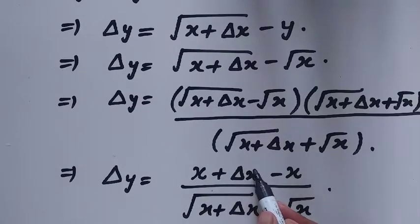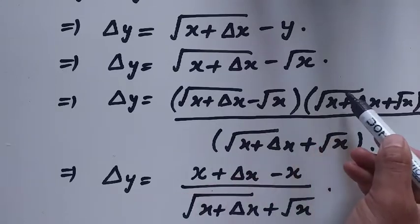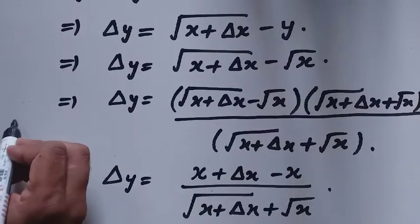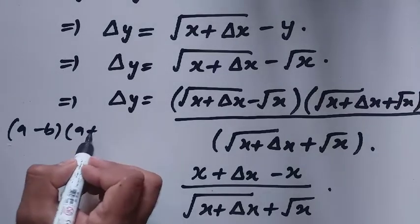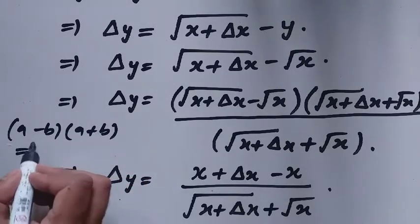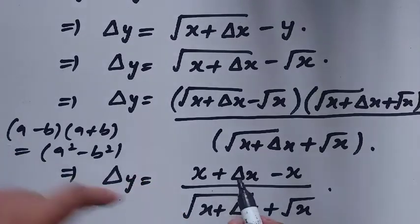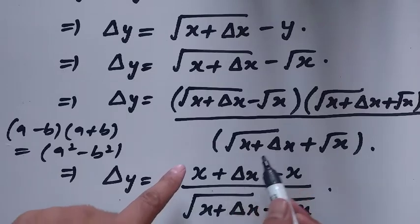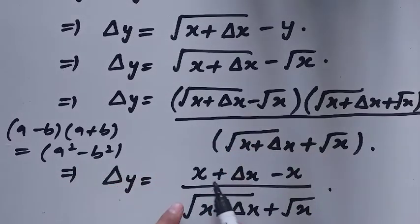Here we used the identity: suppose we have a minus b multiplied by a plus b, that gives a squared minus b squared. The same applies here — when the square root is squared, the root cancels, and we get x plus delta x minus x.